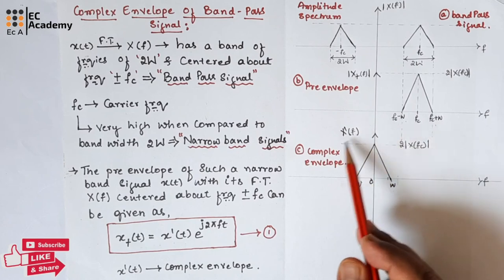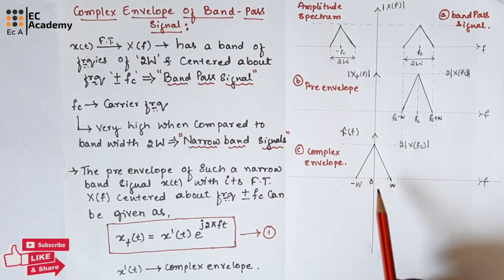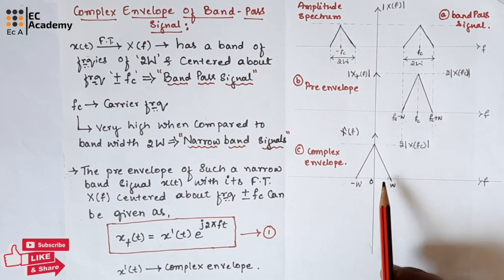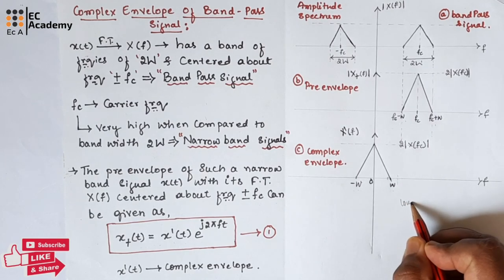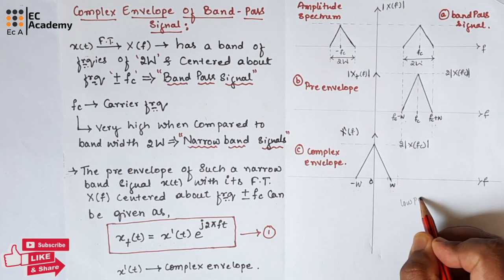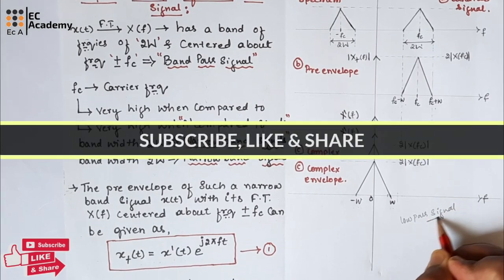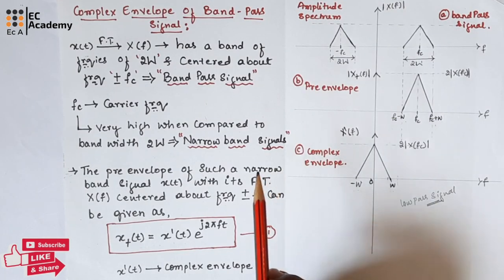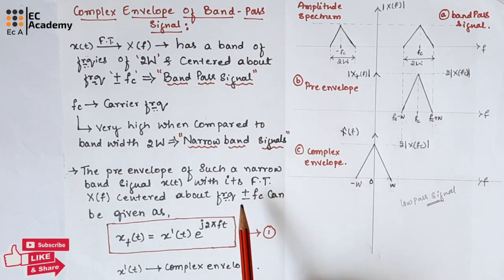So from this result, we can say that the complex envelope X̃(t) of band pass signal X(t) is a low pass signal. This is about the complex envelope of a band pass signal. Hope you have understood the topic. Thank you.